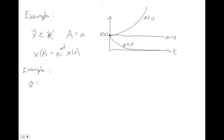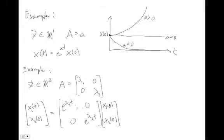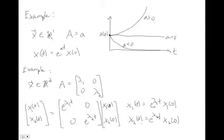Now let's consider x in R2 with A as a diagonal matrix with two distinct eigenvalues λ₁ and λ₂. The solution gives x₁(t) = e^(λ₁t)·x₁₀ and x₂(t) = e^(λ₂t)·x₂₀. These two equations are completely decoupled — x₂ doesn't affect x₁ and vice versa. Each decoupled variable behaves just like the scalar first-order example. Because they're decoupled, one being unstable doesn't affect the other directly.